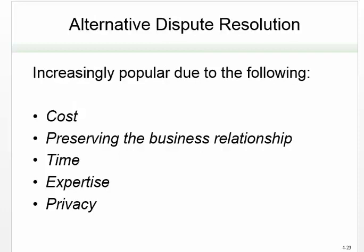If a business decides it doesn't want the Armageddon of litigation and would like an alternative, those alternatives are procedures such as arbitration and mediation. They're very popular — they preserve relationships, can be less costly and shorter. You can have neutrals who are experts in your field preside, so you don't spend a lot of time educating a jury. The decisions are also frequently private.